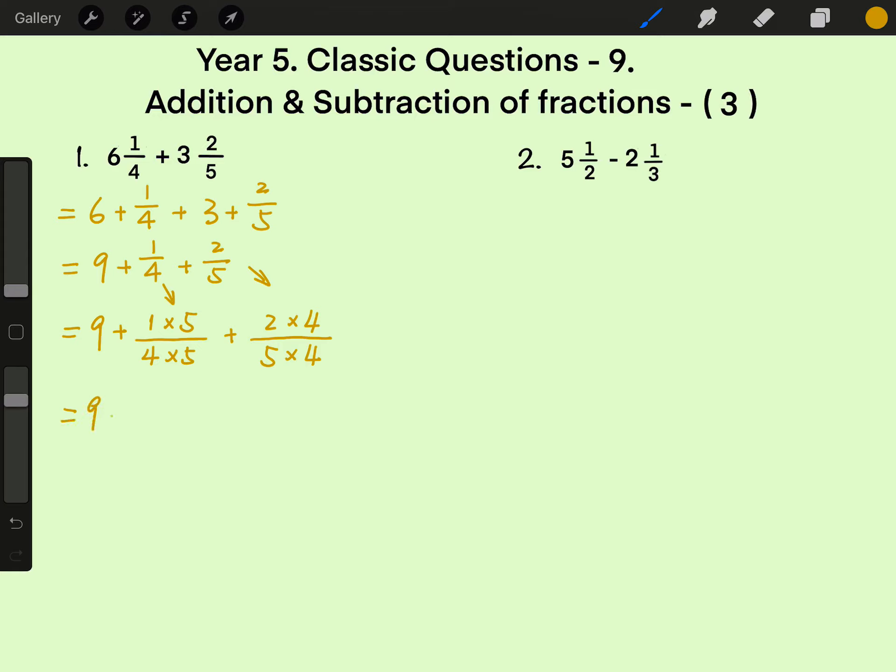we can get 9 plus 1 times 5 is 5, over 4 times 5 is 20, plus 2 times 4 is 8, over 5 times 4 is 20.